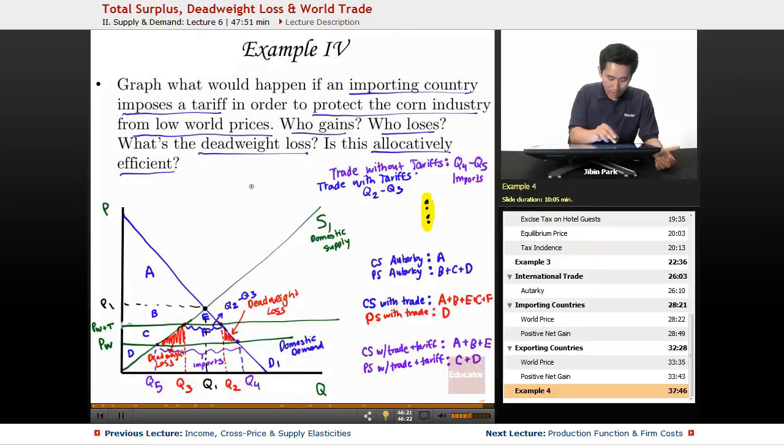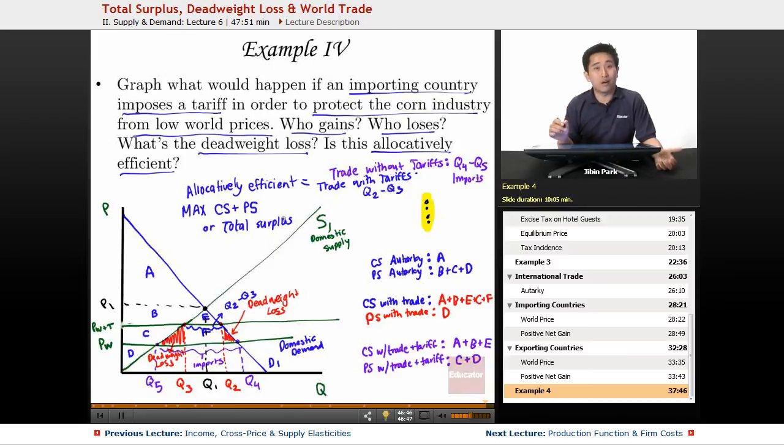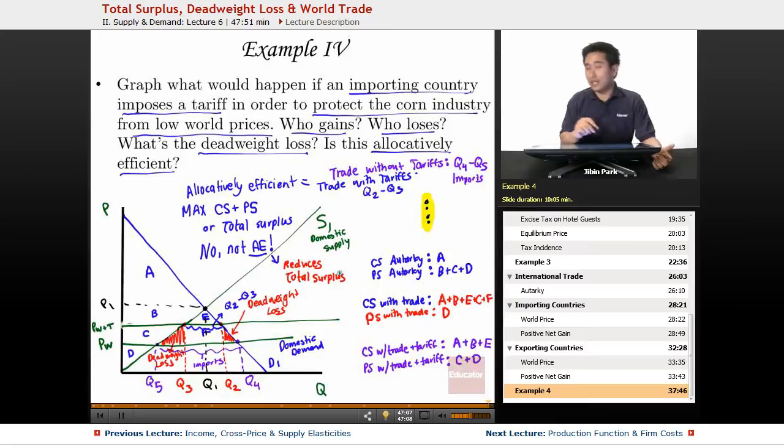And the final question, is this allocatively efficient? Now again, we know that allocatively efficient equals max CS plus PS, or total surplus. So when you add a tariff, is that allocatively efficient? And this is a very clear and resounding no. Not allocatively efficient. And why not? It reduces total surplus. And that's absolutely what you don't want to have in terms of international trade. If the goal is to try to increase total surplus, then you absolutely want to stay away from any tax or tariff because that's going to reduce total surplus.